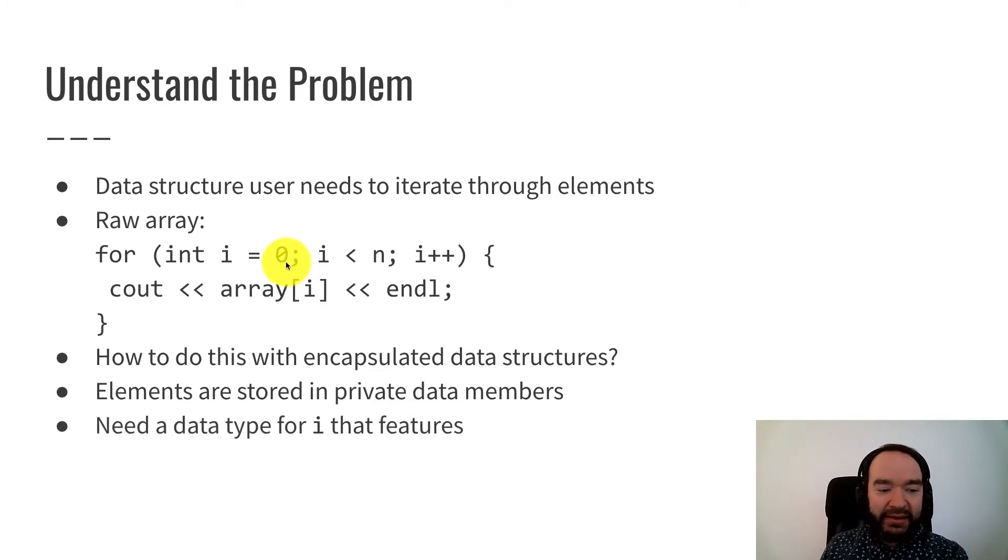So what we need is a data type that works like i here. And that's what an iterator is. It's a data type that you can use in this kind of for loop that visits each element one at a time. But we want to maintain this object-oriented programming practice of encapsulation, meaning that the user of the data structure and iterator cannot mess with the internal data members of the classes. And we also want abstraction so that as a programmer using iterators and data structures, I don't have to know about the implementation details of how this works.